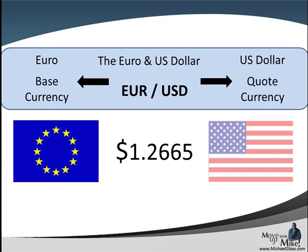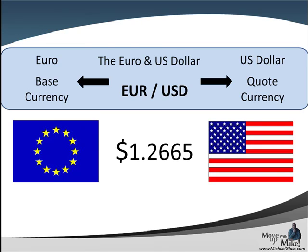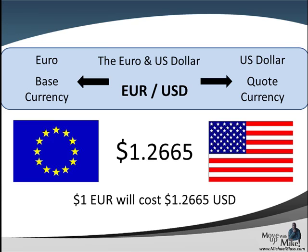We shared that currently the euro dollar quote is 1.2665. In that, the base currency — the euro — for one dollar, the euro is going to cost you 1.2665. Now, those of us in the states aren't really too familiar with that, and that last decimal has a lot to do with what is a PIP.